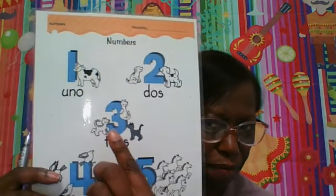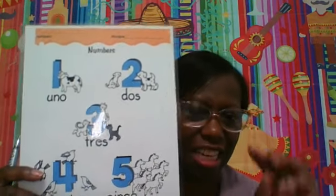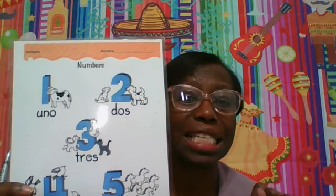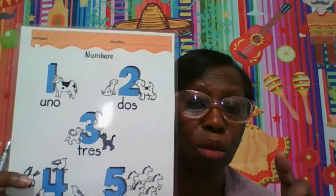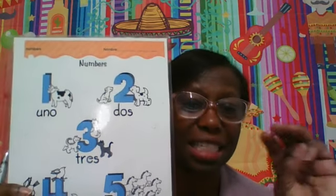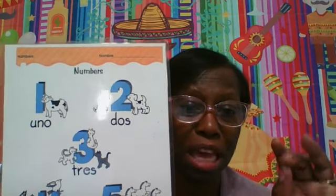And we have three what? Cats — gatos. Tres. Let's go: tres gatos — meow, meow, meow. Say it again: tres gatos — meow, meow, meow. That's three times.